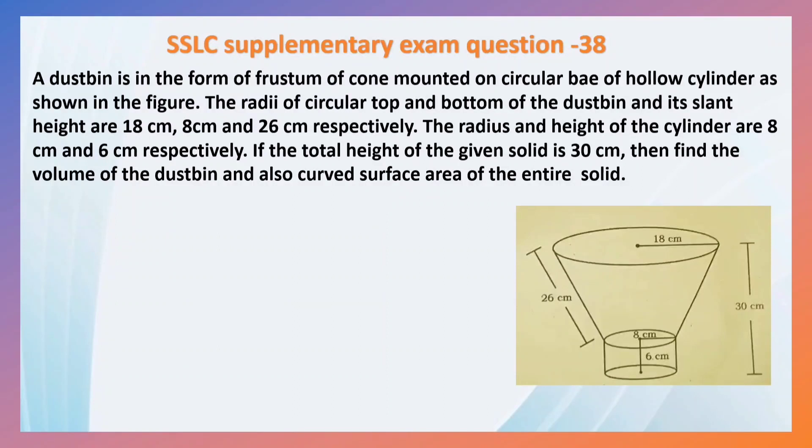A dustbin is in the form of frustum of cone mounted on the circular base of a hollow cylinder as shown in the figure. The radii of circular top and bottom of the dustbin and its slant height are 18 cm, 8 cm and 26 cm respectively. The radius and height of the cylinder are 8 cm and 6 cm respectively. If the total height of the given solid is 30 cm, then find the volume of the dustbin and also the curved surface area of the entire solid.